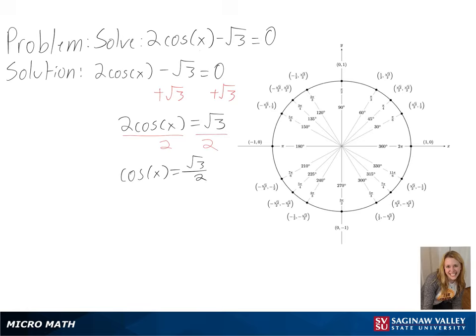Next, we need to look at a unit circle to see where cosine of x does equal the square root of 3 over 2. And we can see here we will get pi over 6 and 11 pi over 6 as our solution.